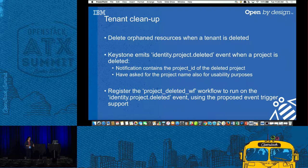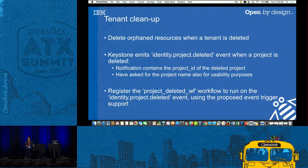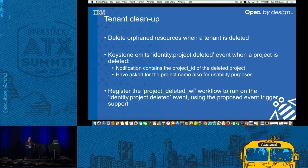This orphaned resource problem had been discussed in the community before. In response, Keystone had created and published a project-deleted event — but no one was responding to it. With a notification trigger in Mistral, we could respond to that tenant-deleted event, trigger a workflow, and initiate cleanup across all deployed projects in your installation. From the event we get the project ID. Unfortunately Keystone today doesn't send the project name — we've asked for that, as it's a usability issue when sending notification emails. So right now our emails only have the project ID.